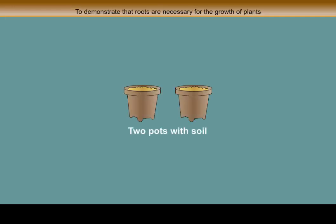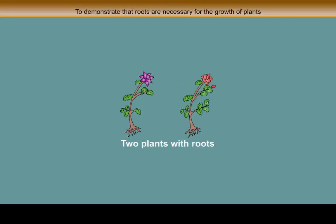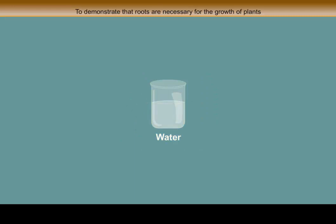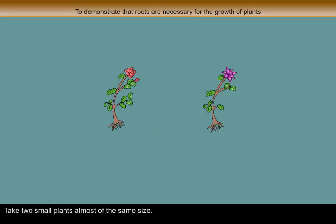Things required: 2 pots with soil, 2 plants with roots, water, scissors. Procedure: Take two small plants almost of the same size.